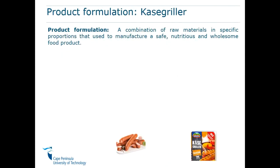Now that we know about the process flow diagram, we must talk about the second thing, which is the product formulation. So what is a product formulation? A product formulation is a combination of raw materials in specific proportions that are used to manufacture a safe, nutritious, and wholesome food product. You have a combination — an amalgamation of ingredients — that come together, that are mixed and processed together in order to produce a safe and nutritious food for the consumer.